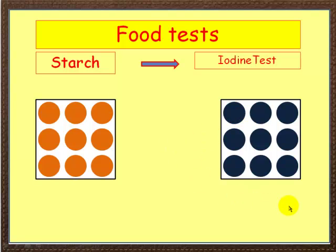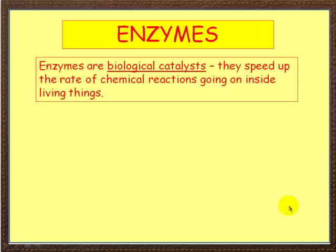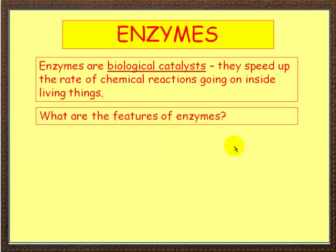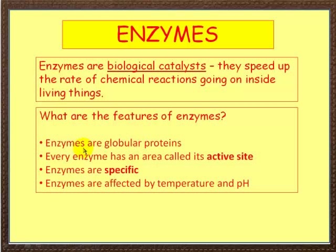I mentioned a bit earlier about enzymes. Now enzymes are biological catalysts — they speed up the rate of chemical reactions going on inside living things. First of all, they're what we call globular proteins. Every enzyme has an area called an active site. They're specific, meaning one enzyme is responsible for one reaction. Enzymes are affected by both temperature and also pH.